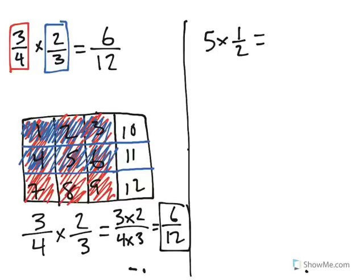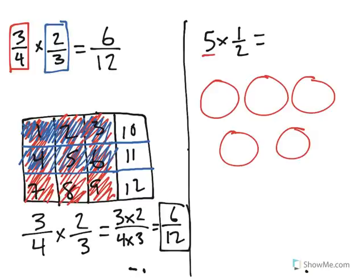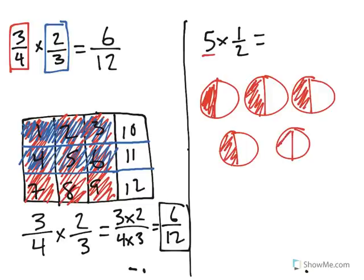Now 5 times 1 half is pretty similar. This time we're going to have 5 groups of 1 half. So I'm going to draw 5 circles, and in each of those circles we're going to shade in 1 half — one half in each of the 5 circles.